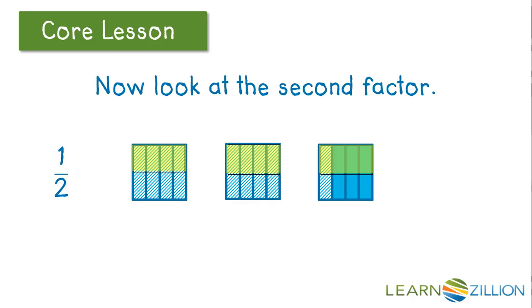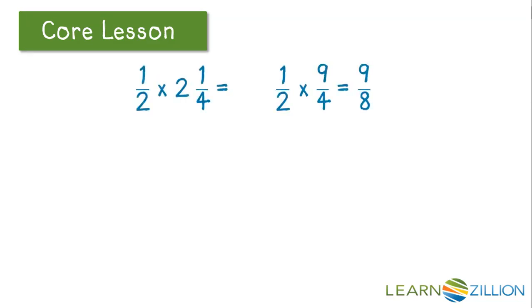So, we have 9 eighths. Notice that we're only looking at the top part that's shaded both yellow and blue. So, we have 1/2 times 2 1/4 equals 1/2 times 9 fourths, which gives us a total, or a product, of 9 eighths.